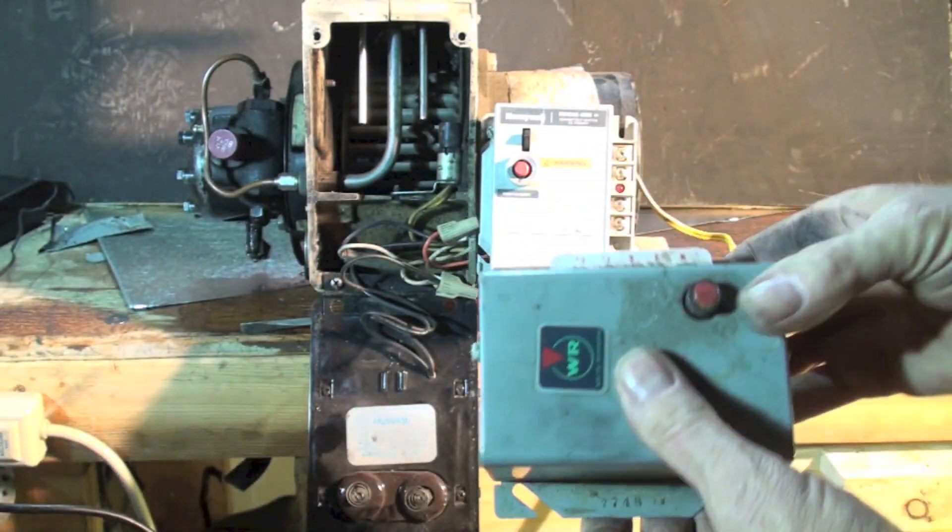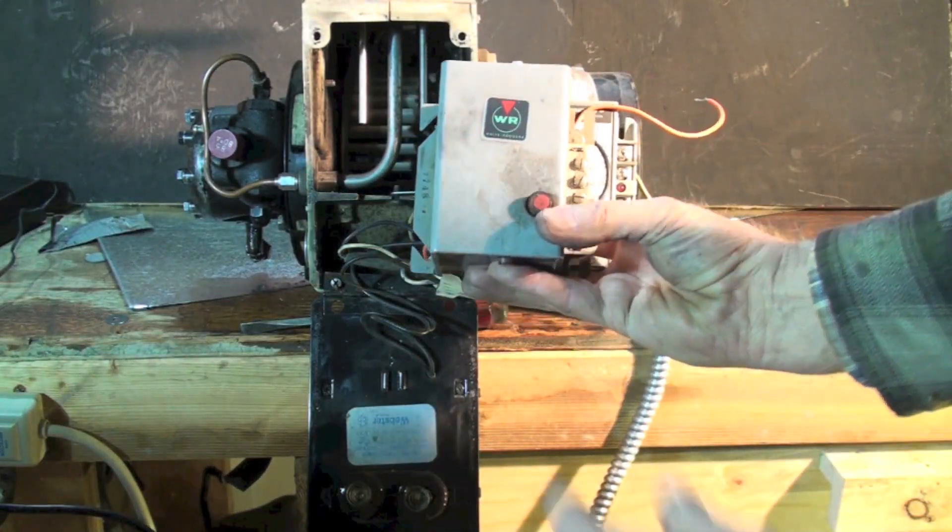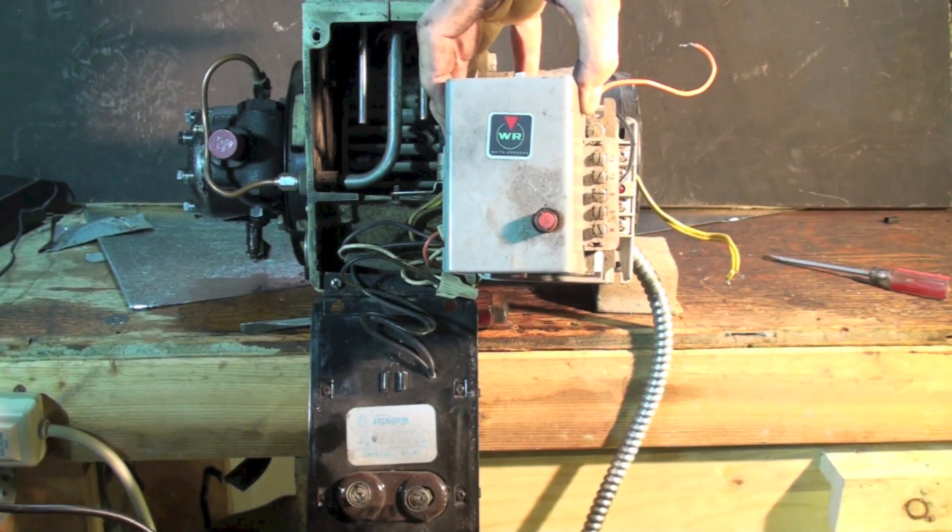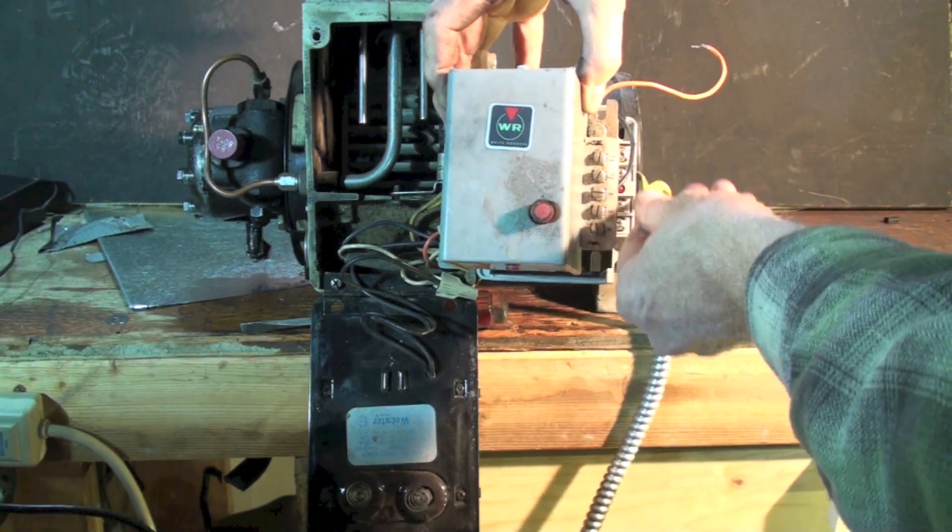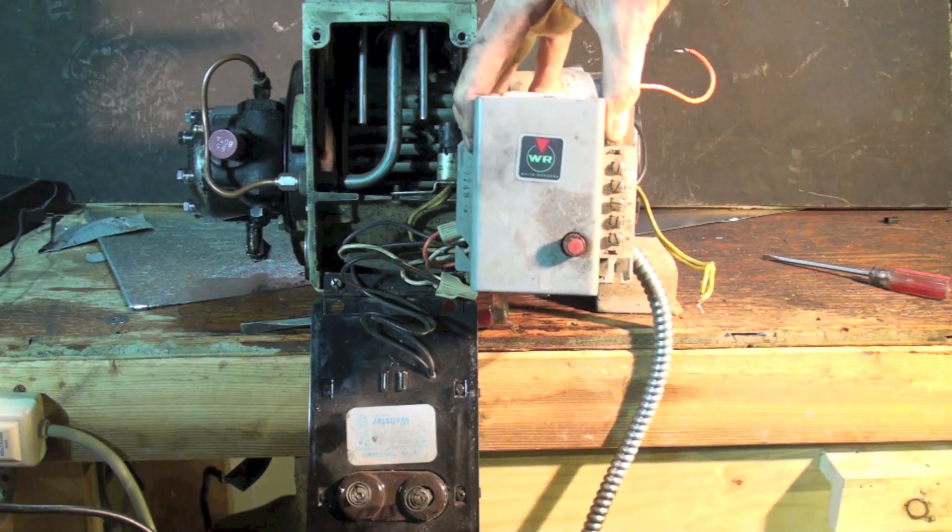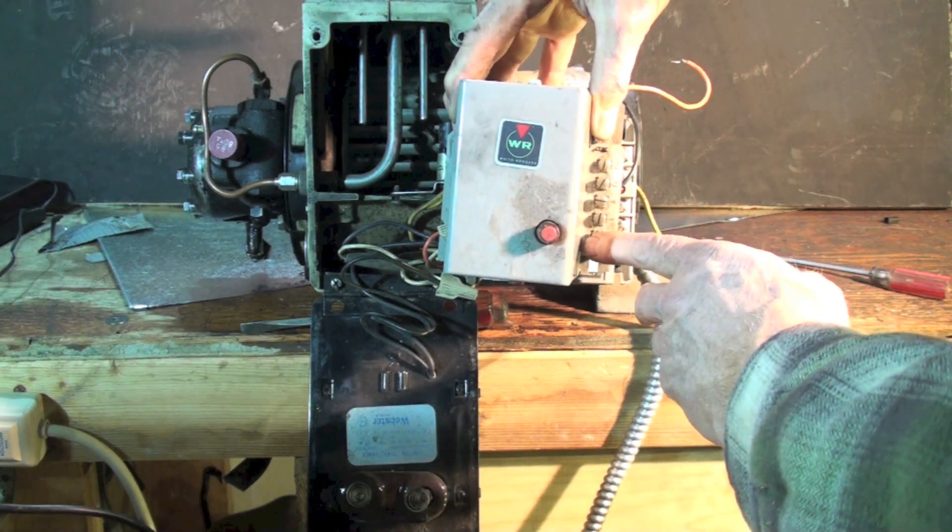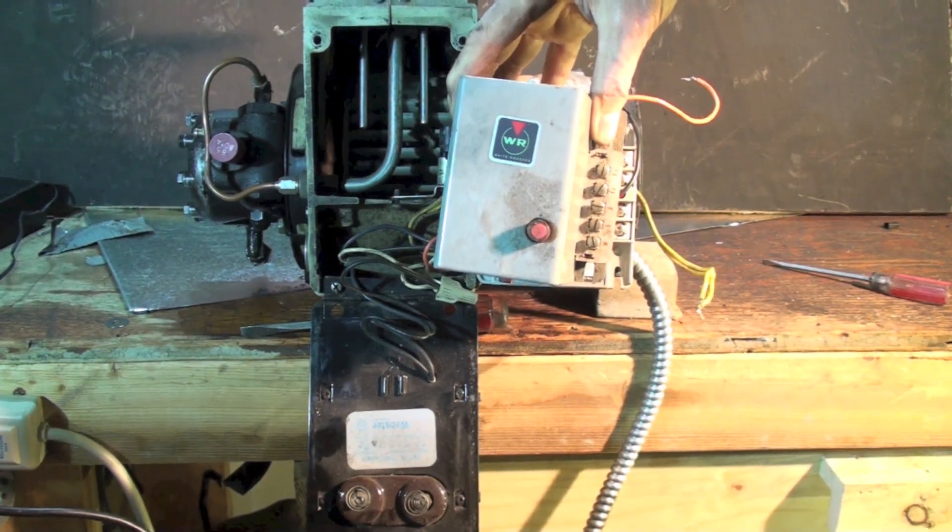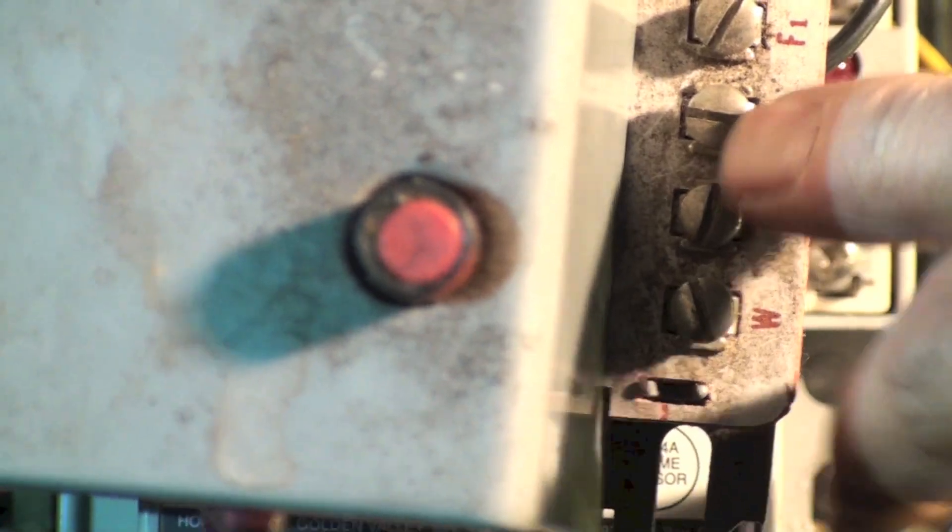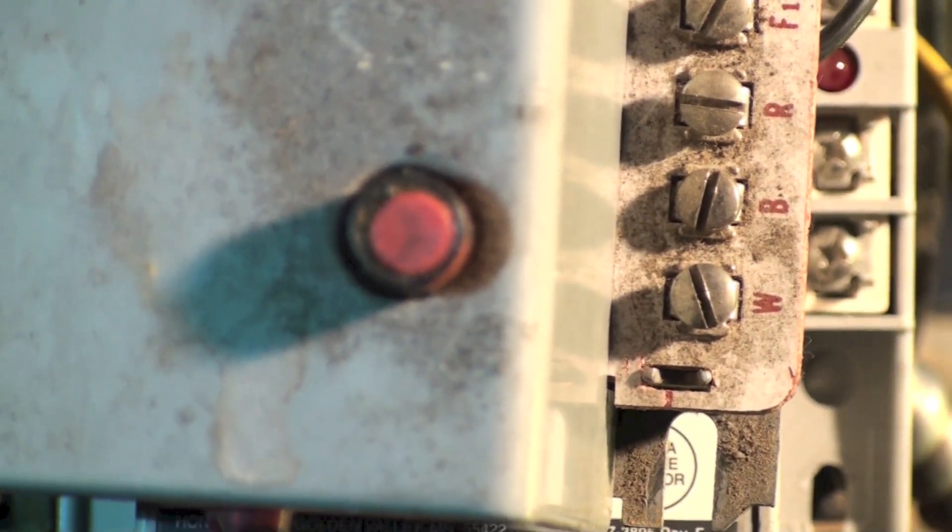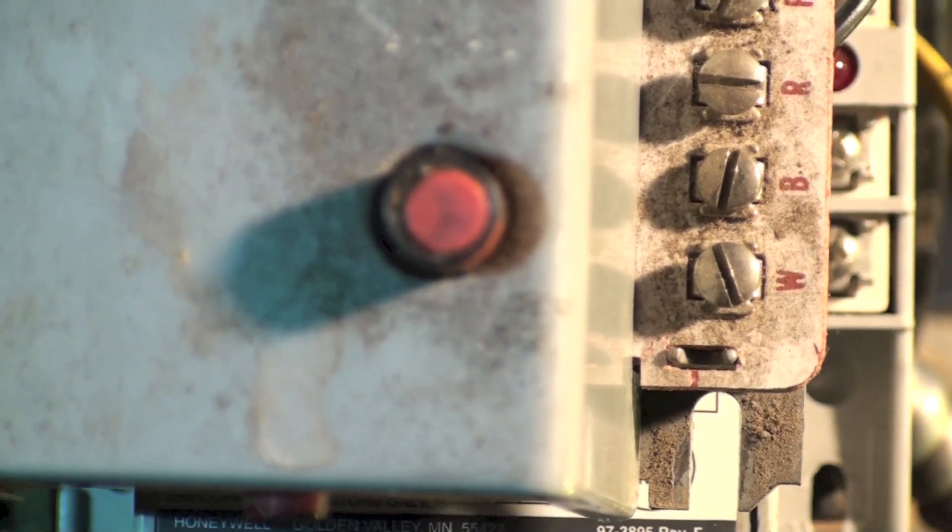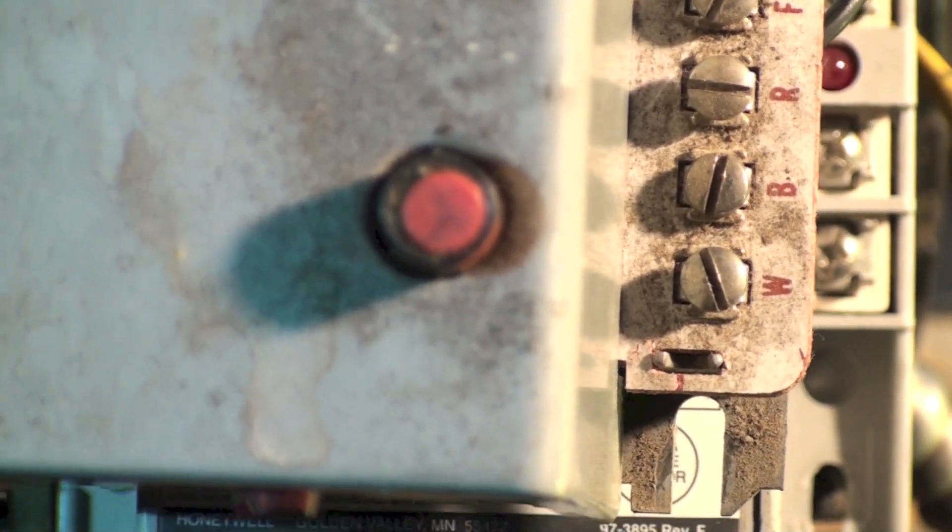The only other difference with this control is, if you notice, I have F1 and F2. Now that's for these yellow wires right here that's going to the flame sense. I have a W, a B, and an R. Let me get a little closer on that so you can see. There's your W, B, and R. That's for a three-wire thermostat. Let's not get into three-wire thermostats today. Let's just deal with a two-wire.